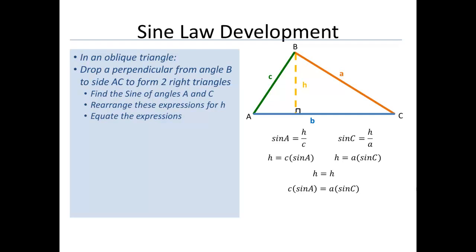What we can now do is apply a little bit of algebra and divide each side by sine A times sine C, and see what cancels out.